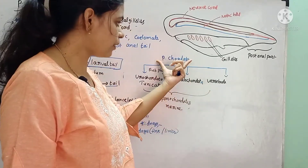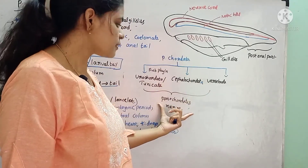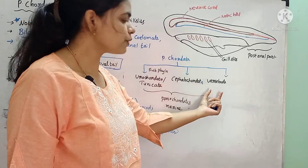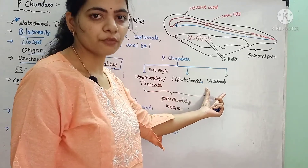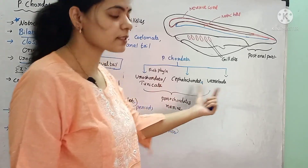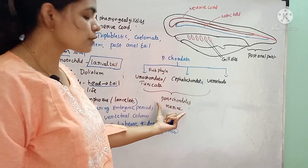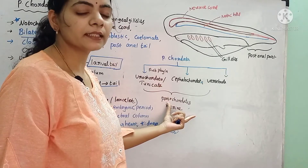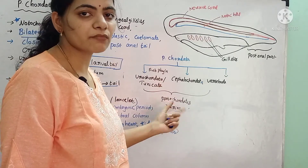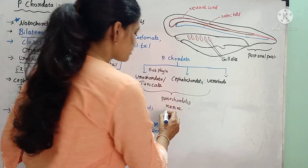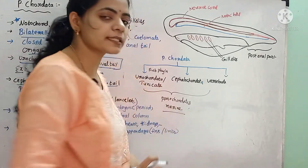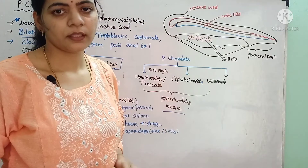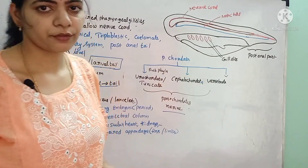Urochordata and Cephalochordata together are often called Protochordates. These protochordates mainly exist exclusively in the marine region, that is in seawater only.